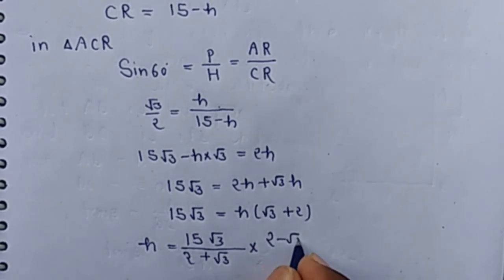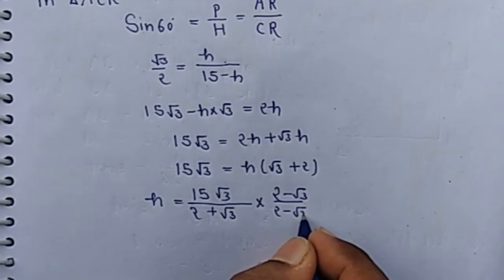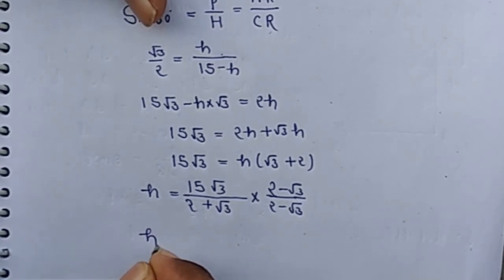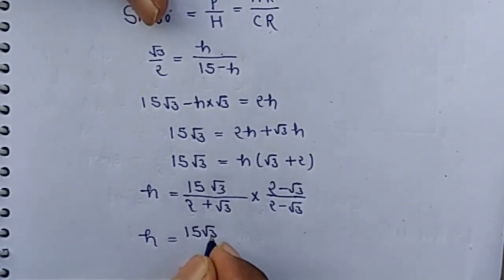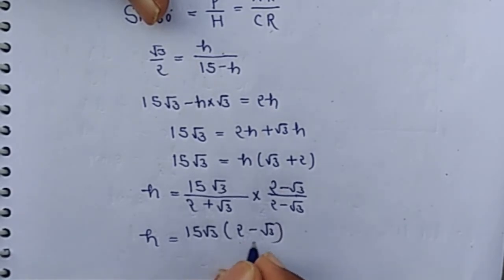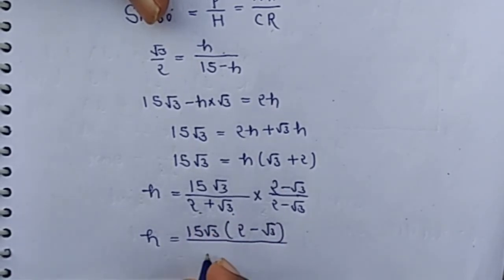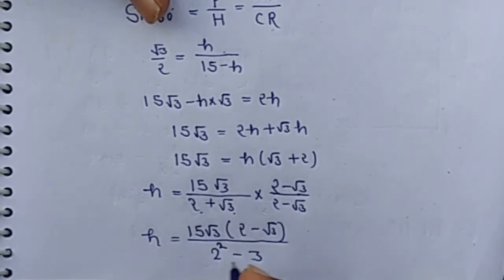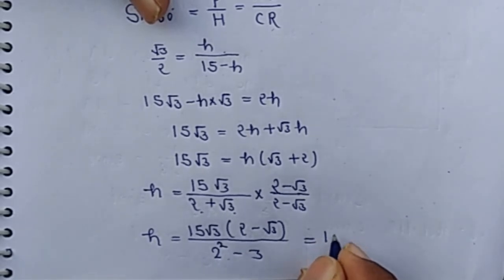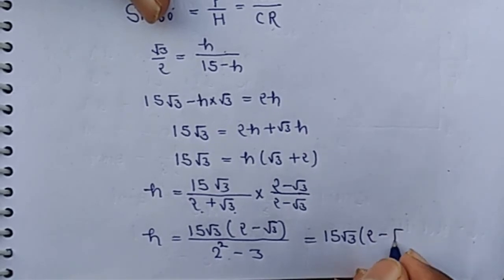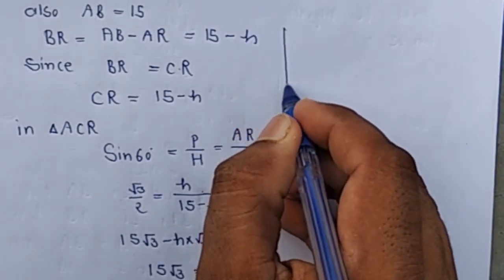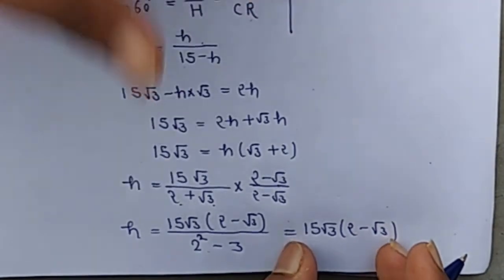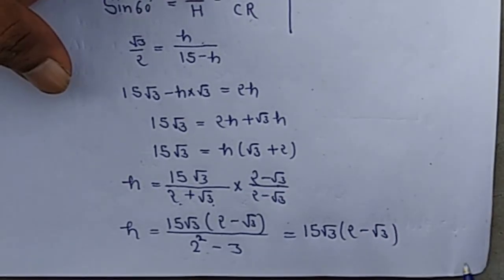Rationalize by multiplying by the conjugate 2 minus root 3 by 2 minus root 3. Then H equal 15 root 3 times 2 minus root 3 by a plus b a minus b equals a square minus b square which is 4 minus 3. We have 15 root 3 times 2 minus root 3. Then it is the value of H. Put the value of root 3 and get the required answer.